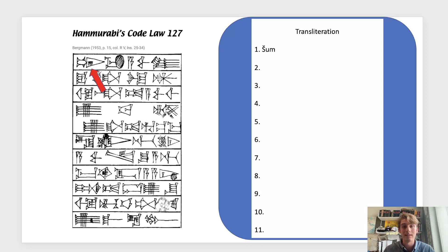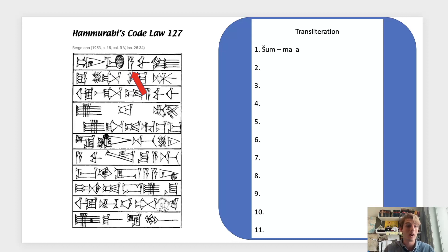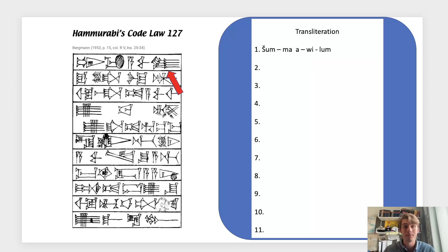Our first sign is the Shum sign, followed by Ma, Ah, and then the Wiwāpi sign. For this transliteration I'm only going to write out the sign value we need to use, but remember that some signs have multiple meanings and we identify which to use based on context. Next we have the Wiw sign followed by the Lung sign.